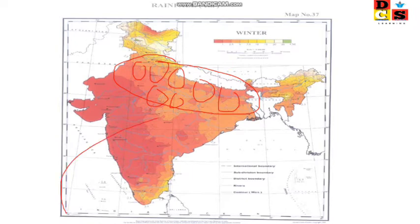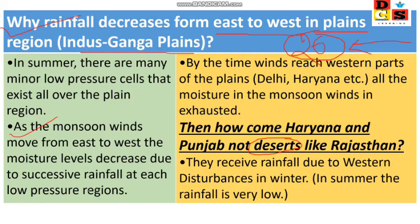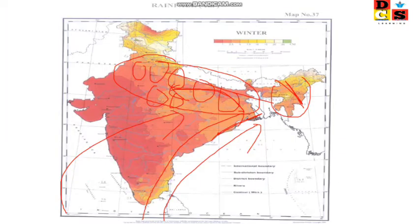First, there are two branches — one is the Arabian Sea branch and the other is the Bay of Bengal branch. As the monsoon winds move from east to west, the Bay of Bengal branch of the southwest monsoon goes from east to west, bringing rainfall progressively across the region.